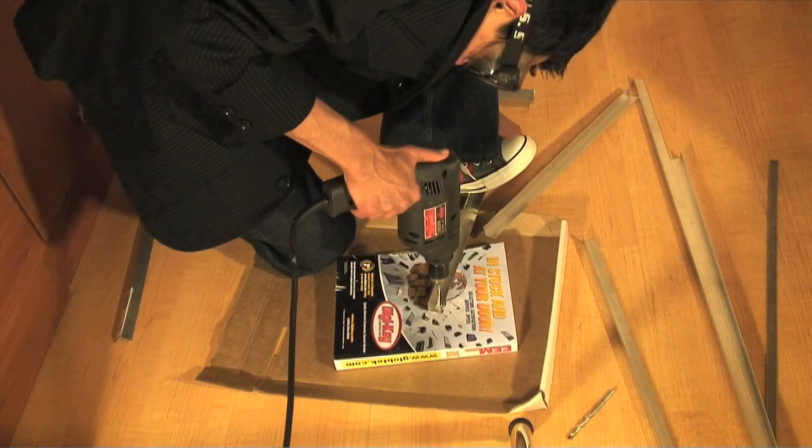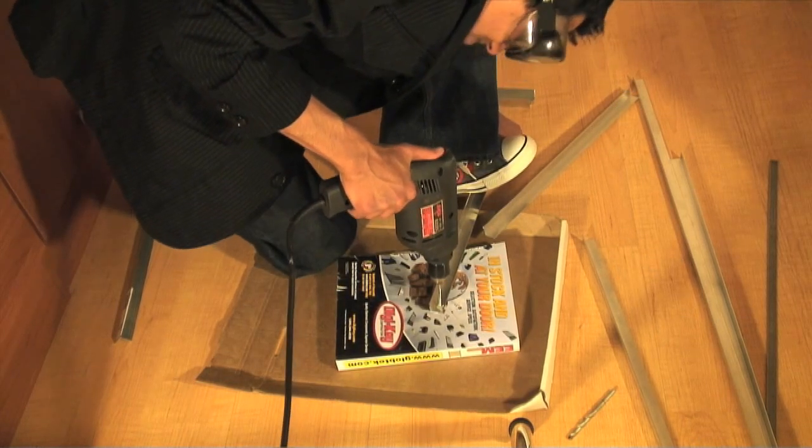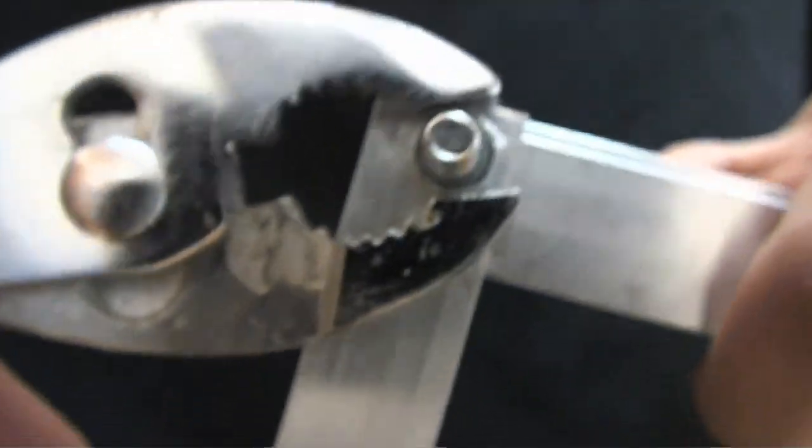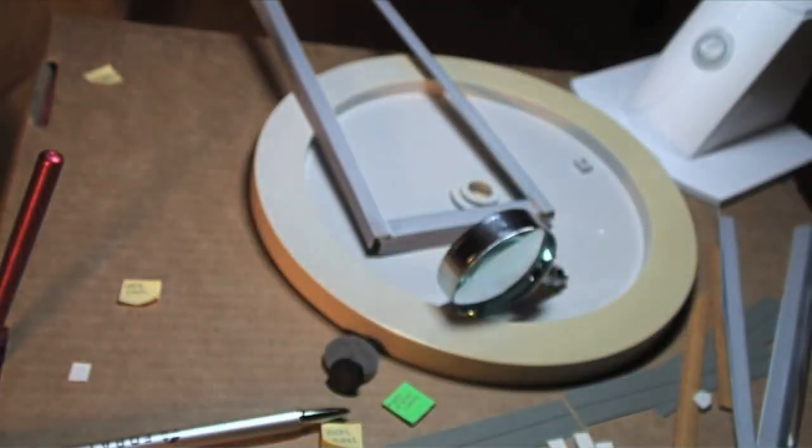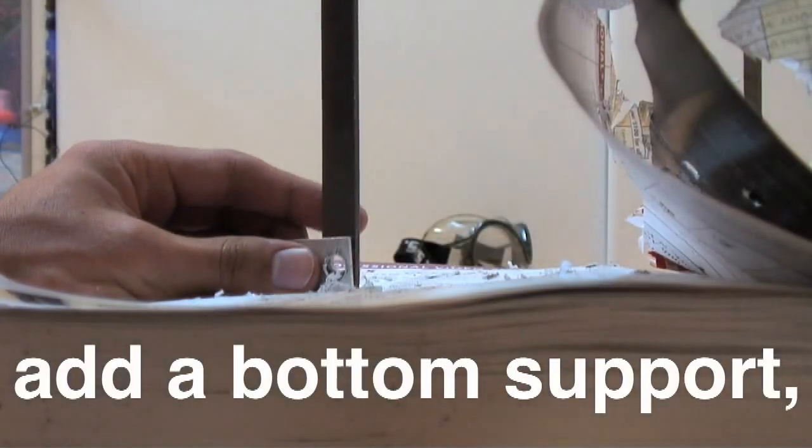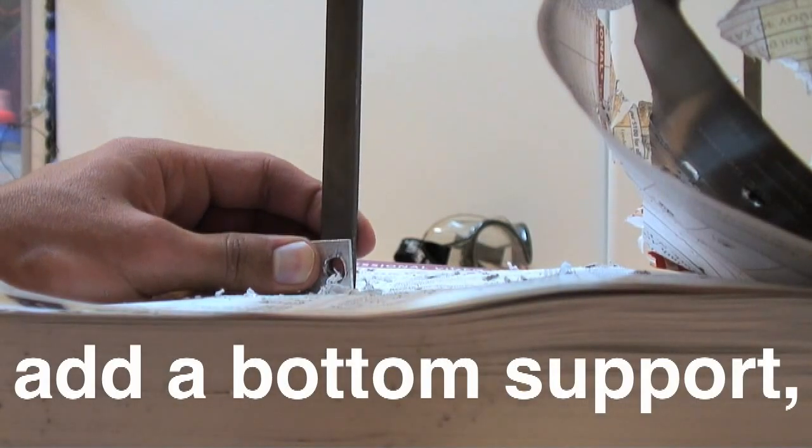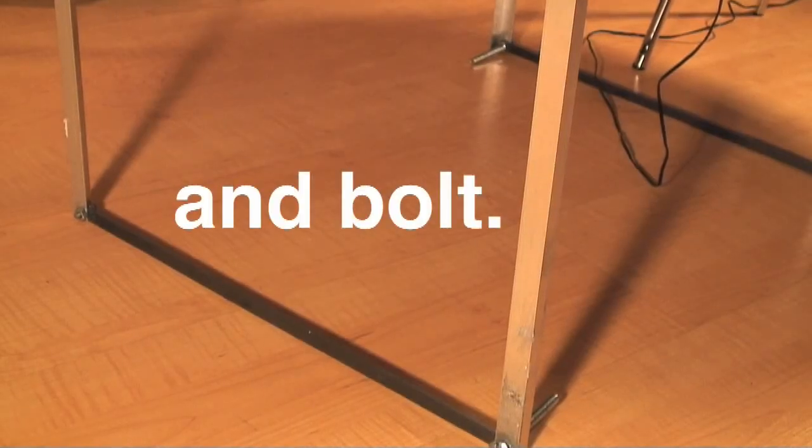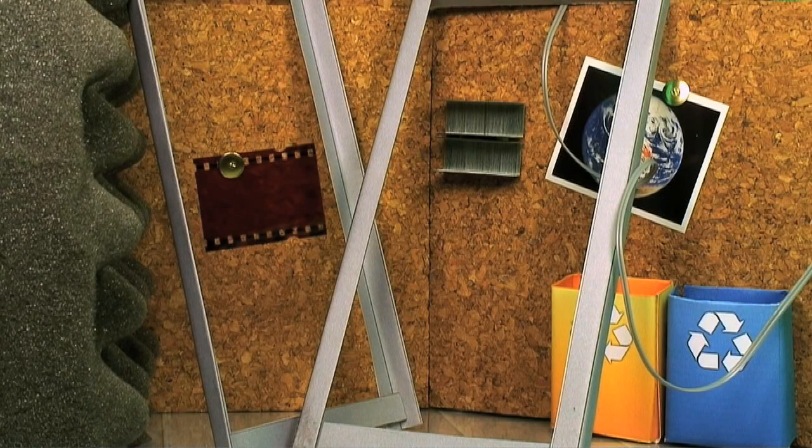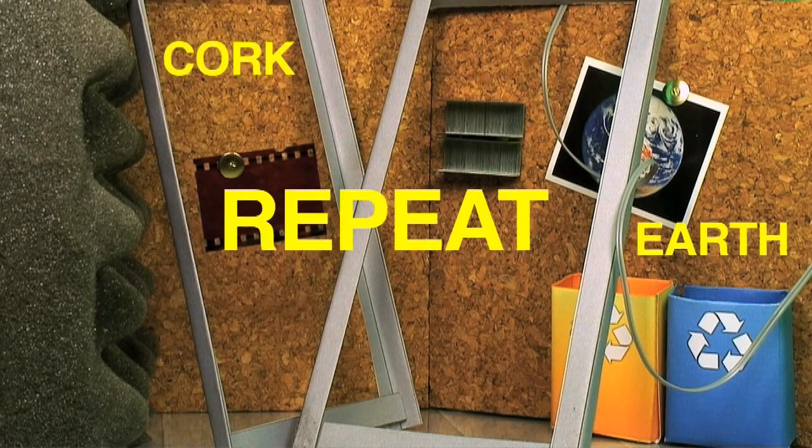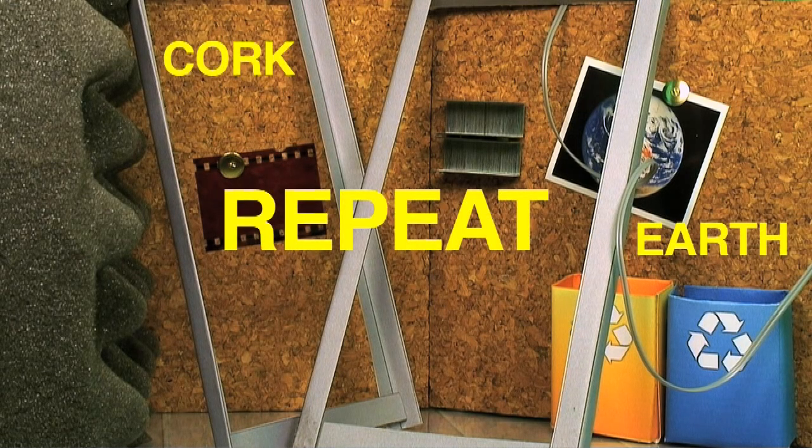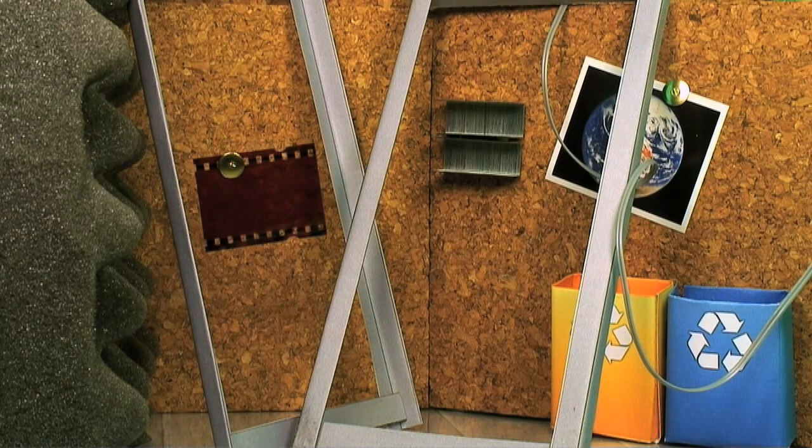By drilling two holes a half inch from each edge, then bolting them in. These will be our legs later on. Now, to hold this whole shape together, we need to add a flat 18-inch piece of aluminum to the bottom and bolt it in just like we did before. For the other side, you can just repeat the same steps and come out with two identical sides.